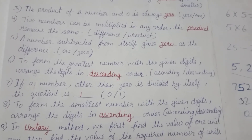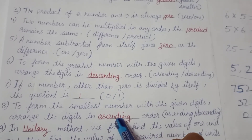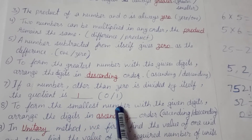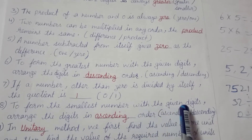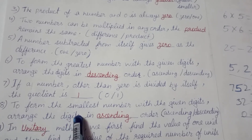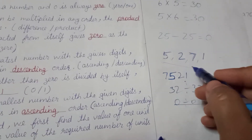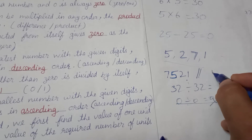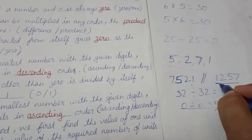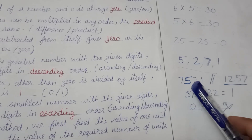To form the smallest number with the given digits, which is the opposite of the previous fill-in-the-blank, we arrange the digits in ascending order. For example, from the digits 1, 2, 5, 7, we write 1 first, then 2, then 5, then 7 — arranged in ascending order. For the greatest number, we used descending order.